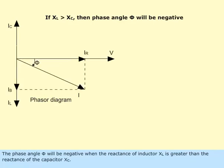The phase angle, phi, will be negative when the reactance of the inductor, X sub L, is greater than the reactance of the capacitor, X sub C.